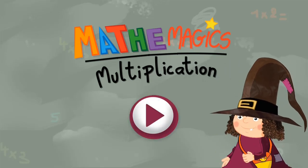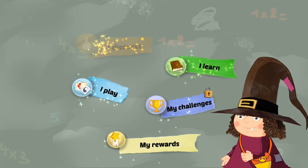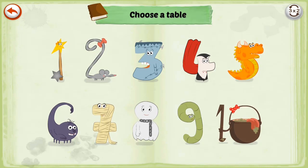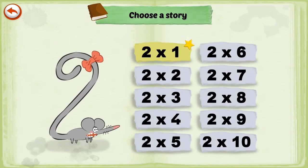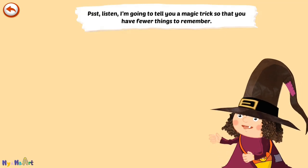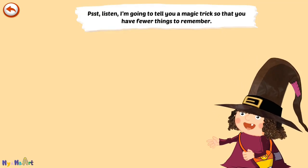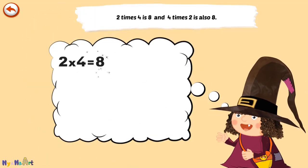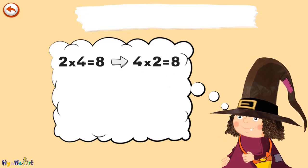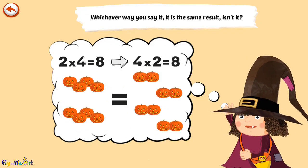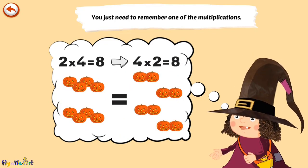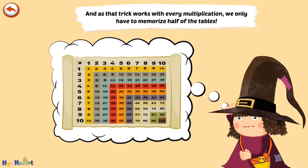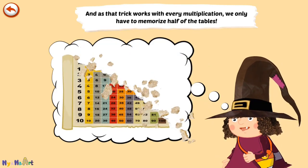Hello! Listen, I'm going to tell you a magic trick so that you have fewer things to remember. 2 times 4 is 8 and 4 times 2 is also 8. Whichever way you say it, it is the same result, isn't it? You just need to remember one of the multiplications. And as that trick works with every multiplication, we only have to memorise half of the tables.